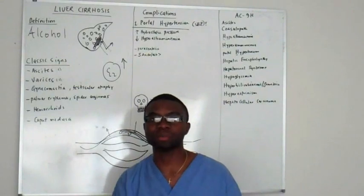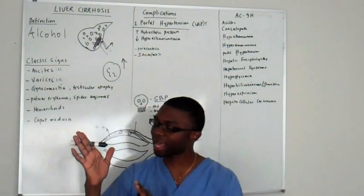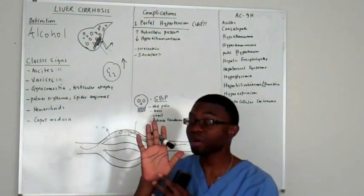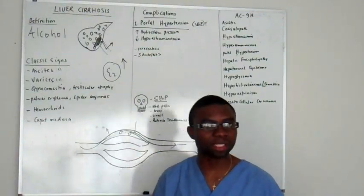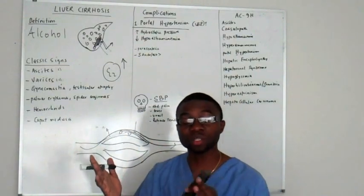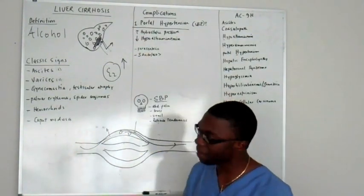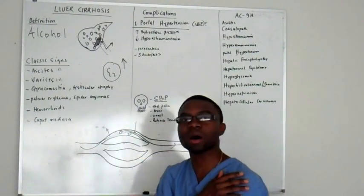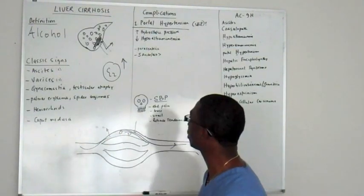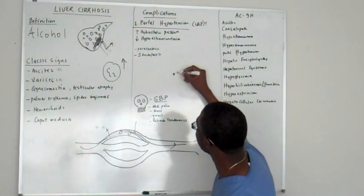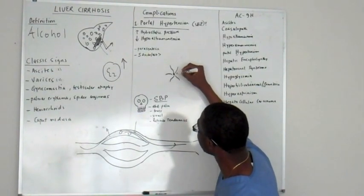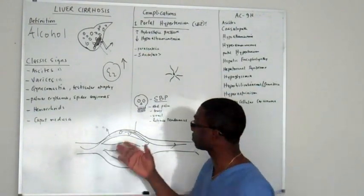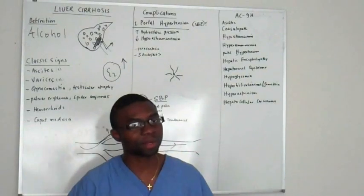Palmar erythema - you look at the patient's hand and it's red. It's not because they're hot; the problem is estrogen causes vasodilation of the capillaries in the hands. Another finding in patients with chronic liver failure is spider angiomas. They have a central spot that radiates out, literally looks like a spider. I've seen it, it's pretty interesting.